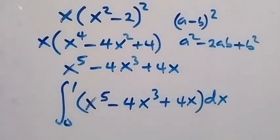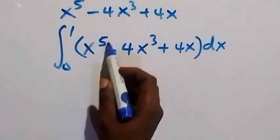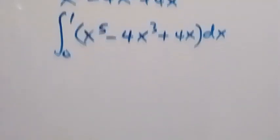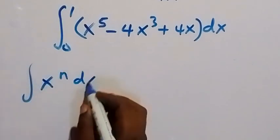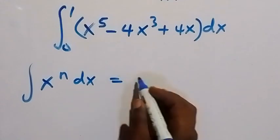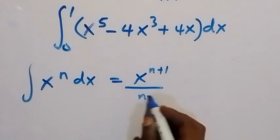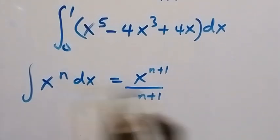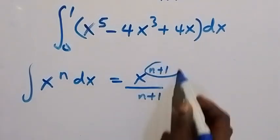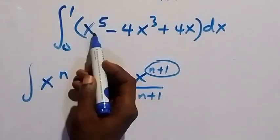Now we integrate. The simple method of integration is: add 1 to the power and divide by the new power. That is, the integral of x raised to power n with respect to x equals x raised to power n plus 1, divided by n plus 1.